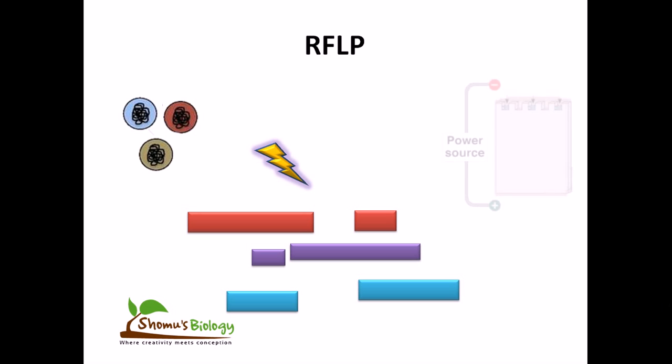After getting these fragments, we load them into the different wells of an agarose gel. Then we run the gel, and what we get is a characteristic pattern.